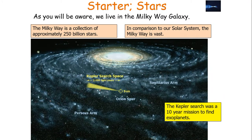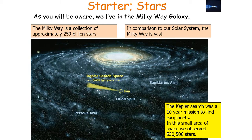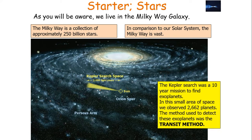In comparison to our own solar system, the Milky Way is vast. The Kepler search was a 10-year mission to find exoplanets, and in the context of the entire Milky Way galaxy, we've barely covered it at all. In this small area of space, we observed over 530,000 stars in this small area of the Milky Way alone, which included 2,662 planets.